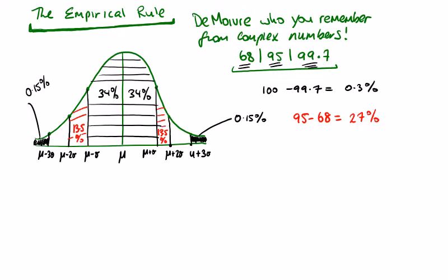Now the last bit is the difference between 95 percent and 99.7 percent which is 4.7 percent, and if we divide that by two we're going to get 2.35 percent. So 2.35 and 2.35.